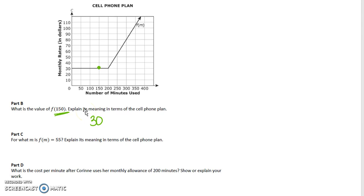f(150), that value is 30. What that means is that she pays $30 for 150 minutes. What about this next part? For what M is f(m) equal to 55? Now we're given what y is equal to, but we need to find what our x's are. So we need to go to about 55 and look over.